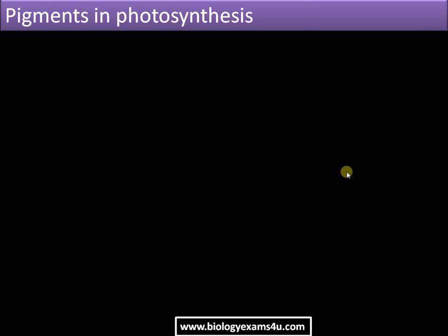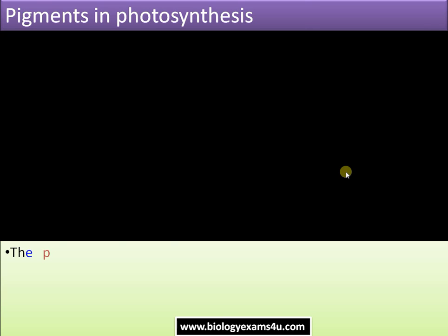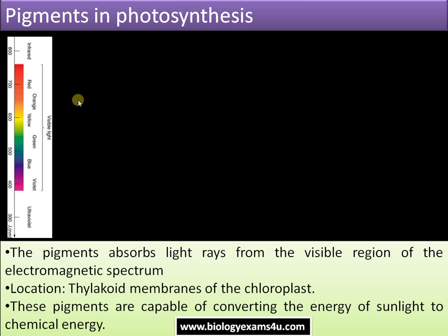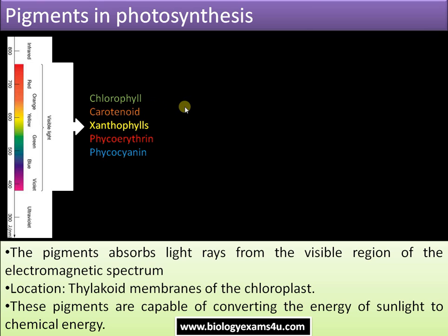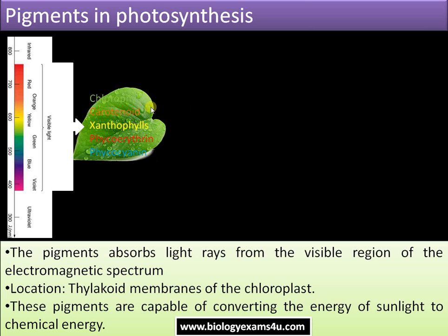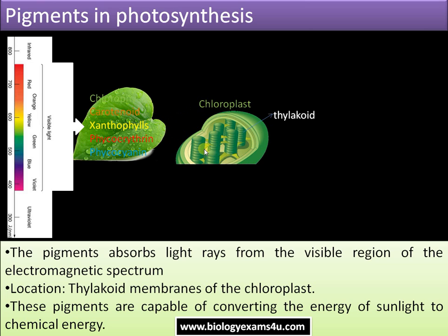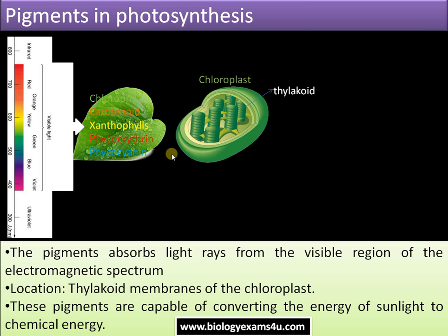Starting with the basics of pigments in photosynthesis: pigments are chemicals that can absorb light in the visible region, that is from 400 to 700 nanometers. These pigments include chlorophyll, carotenoid, xanthophyll, phycoerythrin, and phycocyanin. Chlorophyll is the most predominant pigment, which is why leaves appear green.